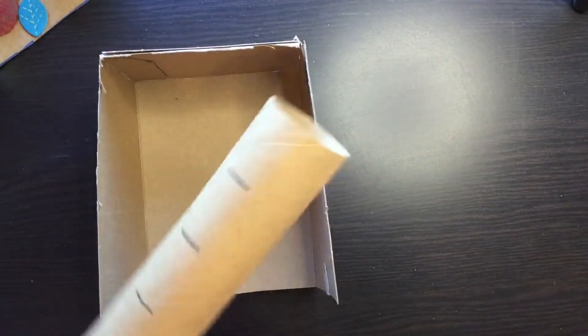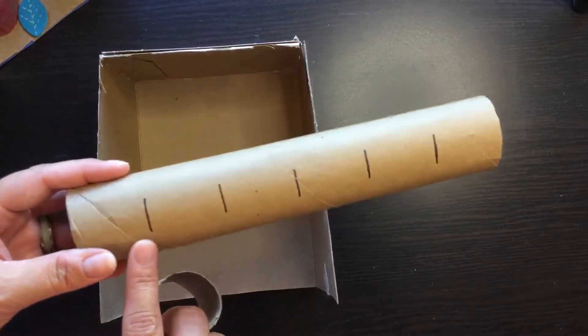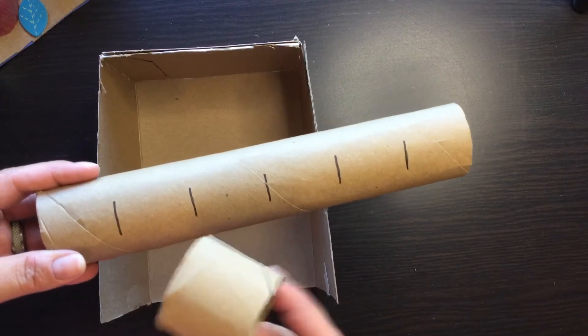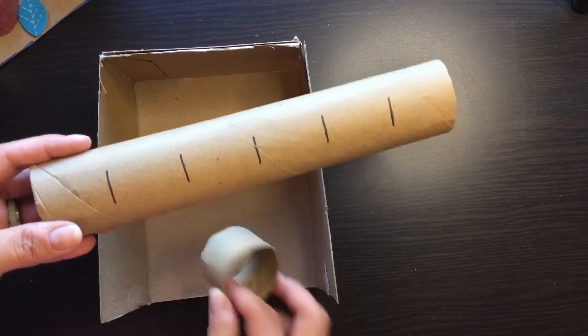One of the things you want to do is measure the empty roll every four centimeters, and once you cut them out, you have a small cylinder like this.